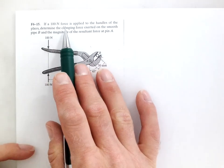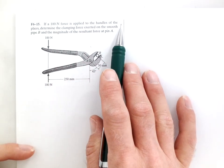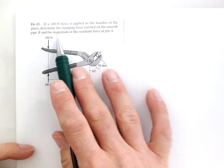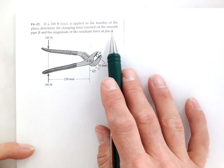If a 100 newton force is applied to the handles of the pliers, determine the clamping force on the smooth pipe B and the magnitude of the force at pin A.